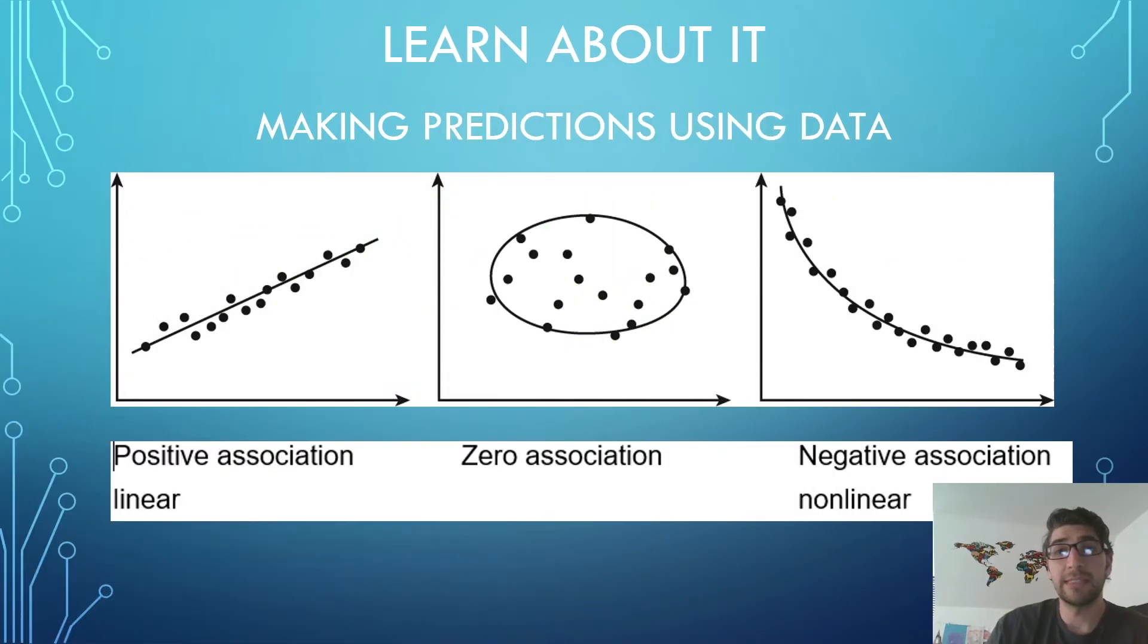Here are some examples of ways that data can be related. We will look at the data in two ways. First, we will decide if the data has a positive, negative, or zero association. To do this, we will look to see if the quantities increase together, like in the picture on the left, which we will call positive association. In the middle picture, as x value increases, the y values are all over the place, so we say that there is zero correlation. Lastly, in the picture on the right, as the x value increases, the y values decrease, so we say there is a negative correlation. That is, as one quantity goes up, the other quantity goes down.